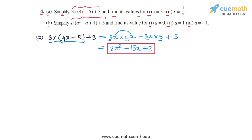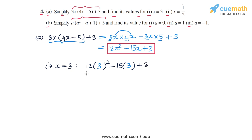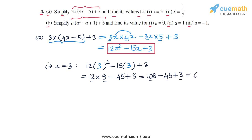Now we find the value for x equal to 3. Substituting into 12x squared minus 15x plus 3, we get 12 times 3 squared minus 15 times 3 plus 3. That is 12 into 9 minus 45 plus 3, which is 108 minus 45 plus 3, giving us 66. So the value of the expression for x equal to 3 is 66.